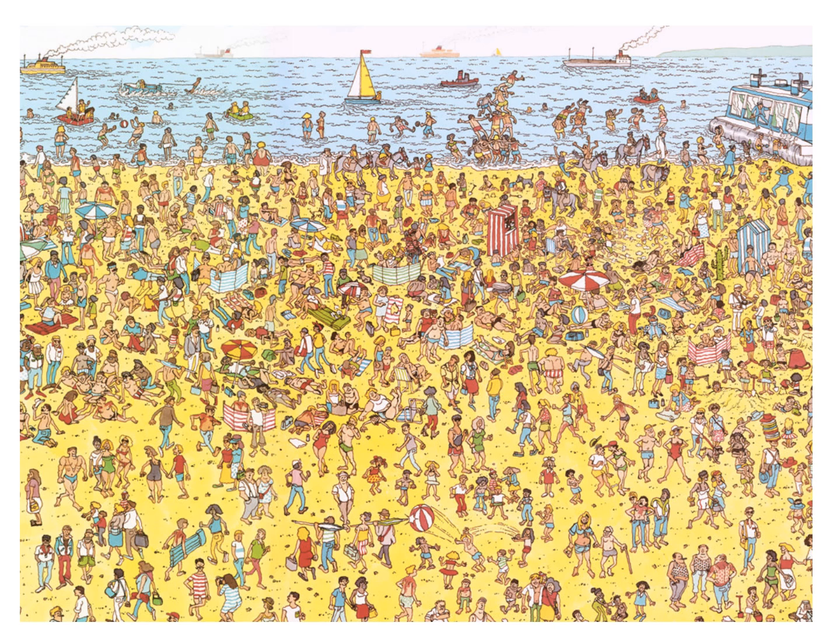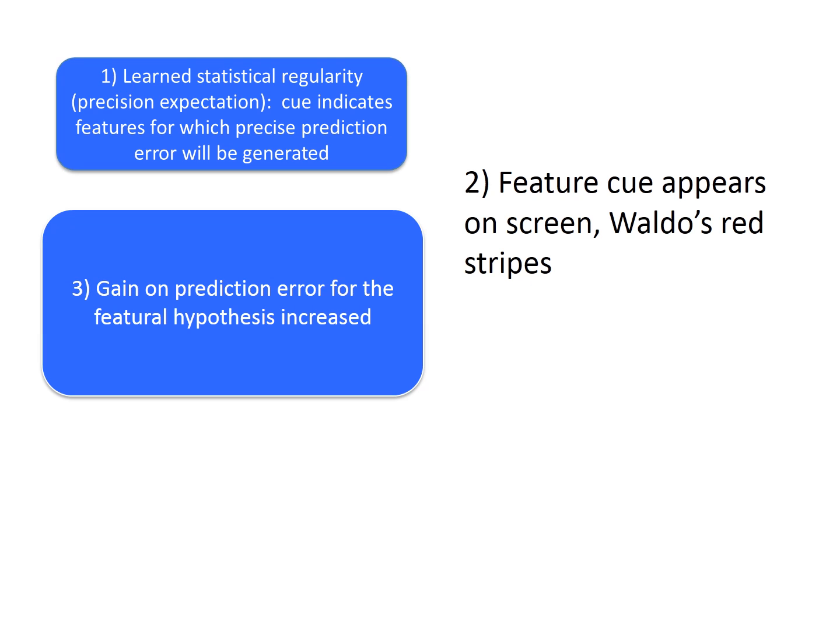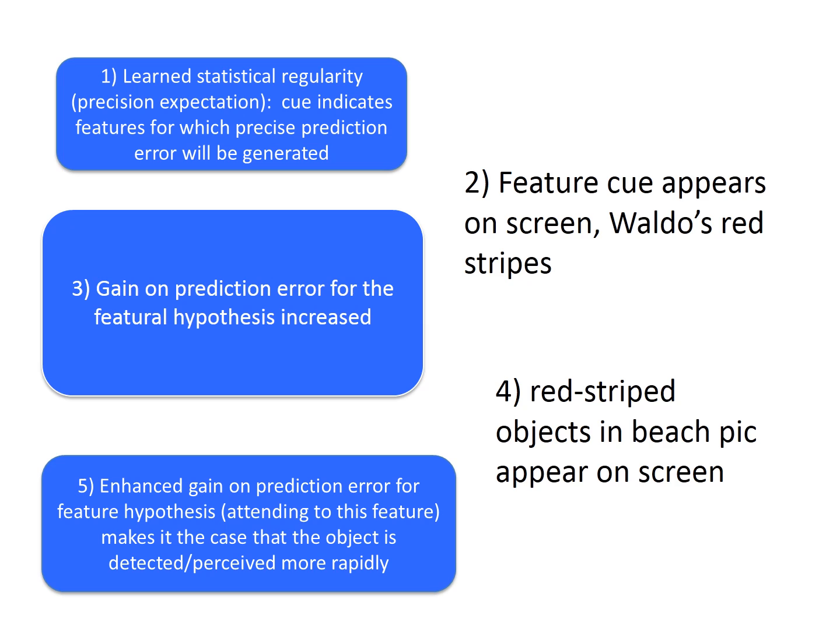It's supposed to be the same as the spatial account. Let's walk through it step by step. First, we have a precision expectation, that the cue indicates features for which precise prediction error will be generated. Second, the feature cue appears on the screen, in this case, Waldo's red stripes. Three, the gain on prediction error for the featural hypothesis is increased. Four, the red striped objects in the beach pic appear on the screen. And five, enhanced gain on prediction error for feature hypothesis, which is attending to this feature, makes it the case that the object is detected or perceived more rapidly.